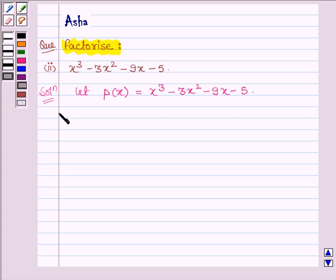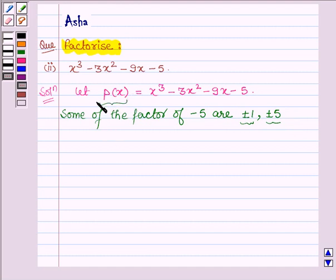We shall now look for all the factors of minus 5, and some of the factors of minus 5 are plus minus 1 and plus minus 5. We will replace x by these values of the factors of minus 5 such that we get the value of this polynomial as 0.